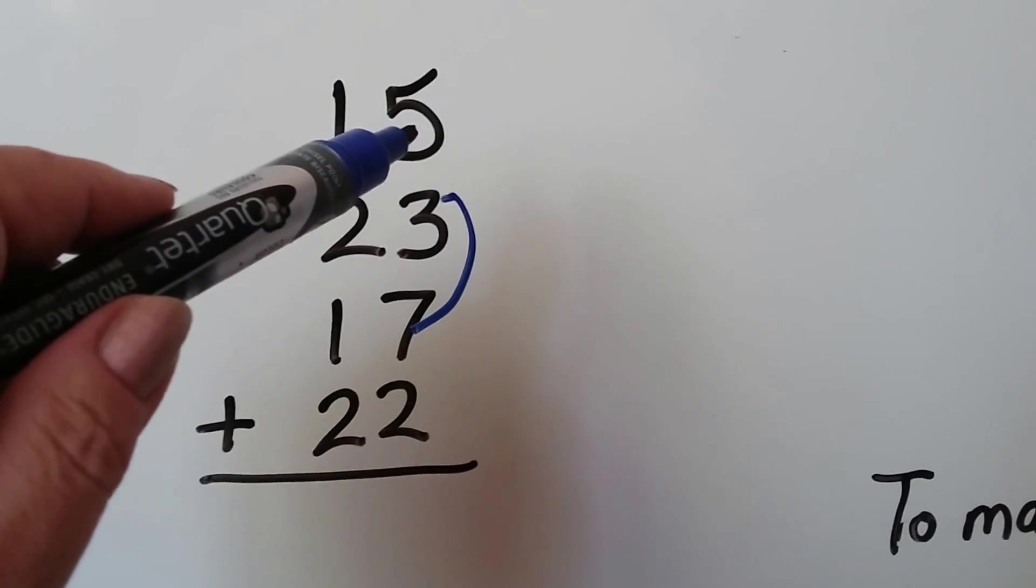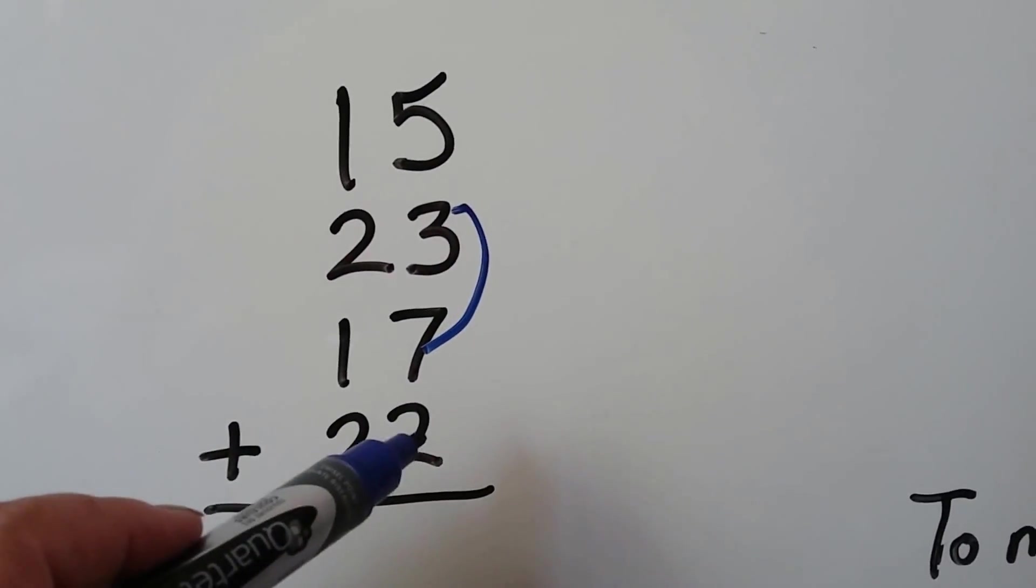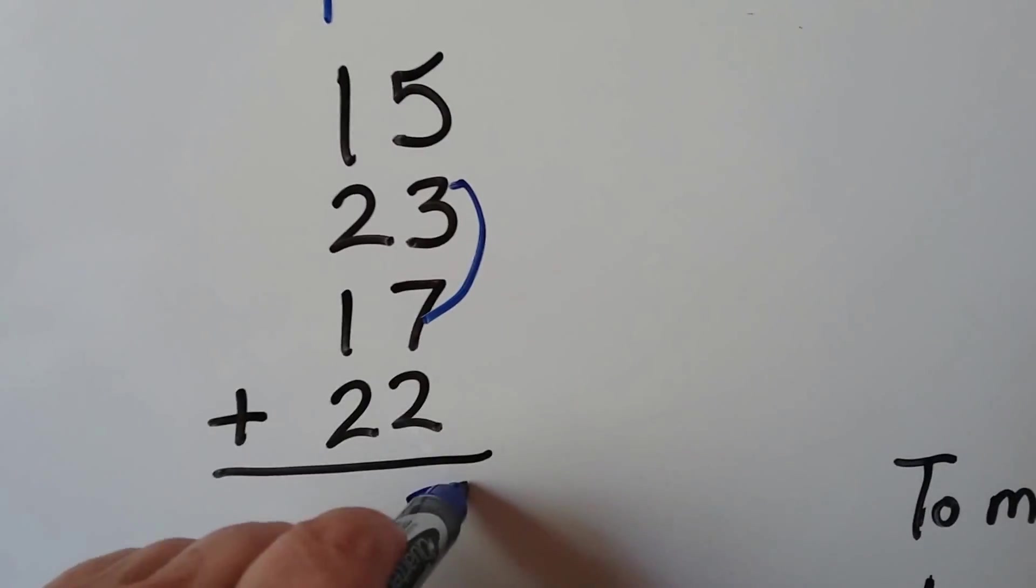So now we know we have ten. We can add five to that. That gives us 15, 16, 17. We regroup the one. We put the seven down.